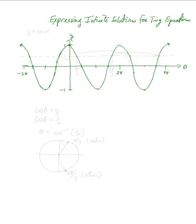Welcome to the session on expressing infinite solutions for trig equations. When you solve trig equations, you're going to get infinite solutions. How do you write that down? Essentially, trig functions are periodic, so there are going to be infinite solutions pretty much almost all the time, unless you have some kind of restriction given beforehand. Let's take a look at an example.